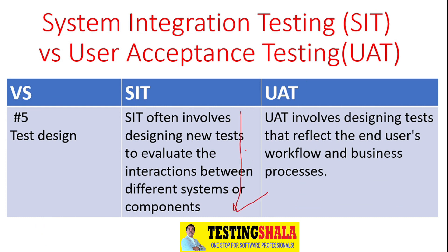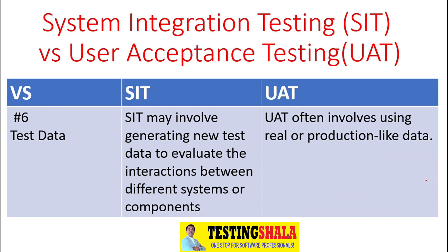The fifth difference is that in SIT, test decisions are based on interactions between different systems or components, but in UAT, test decisions are based on the end user's workflow and business processes, because UAT focuses on the workflows and business processes of an application.